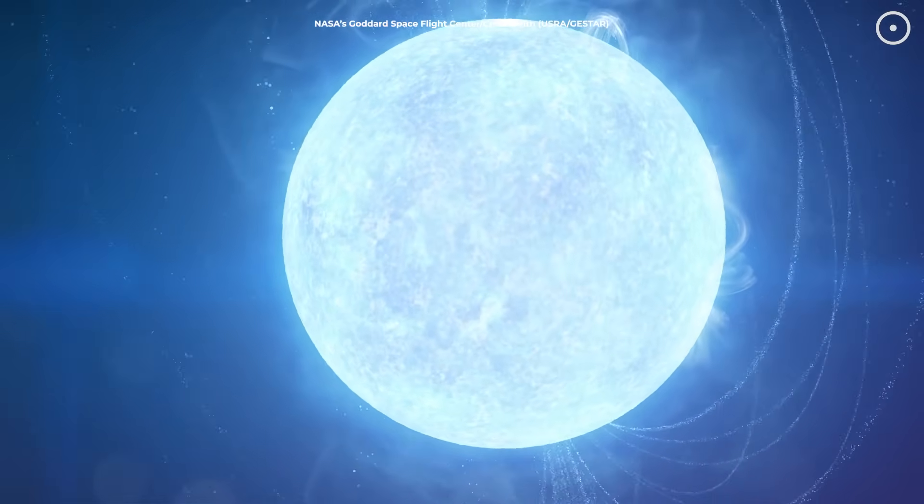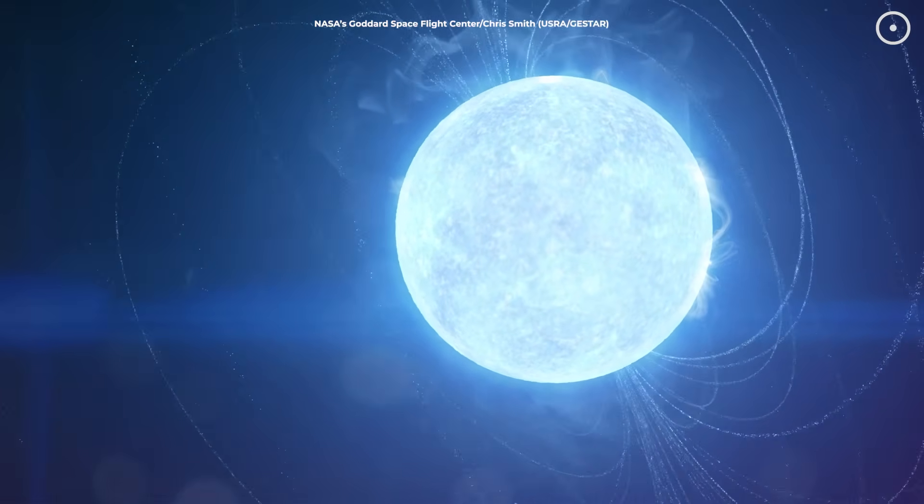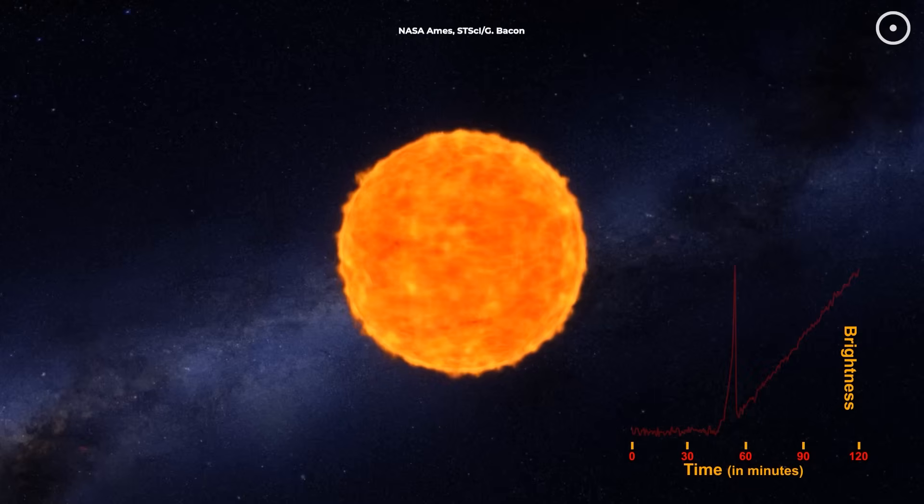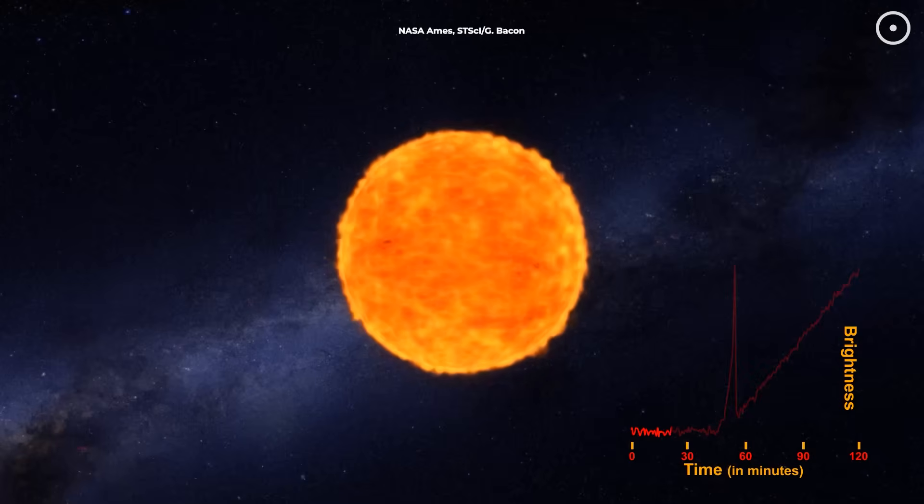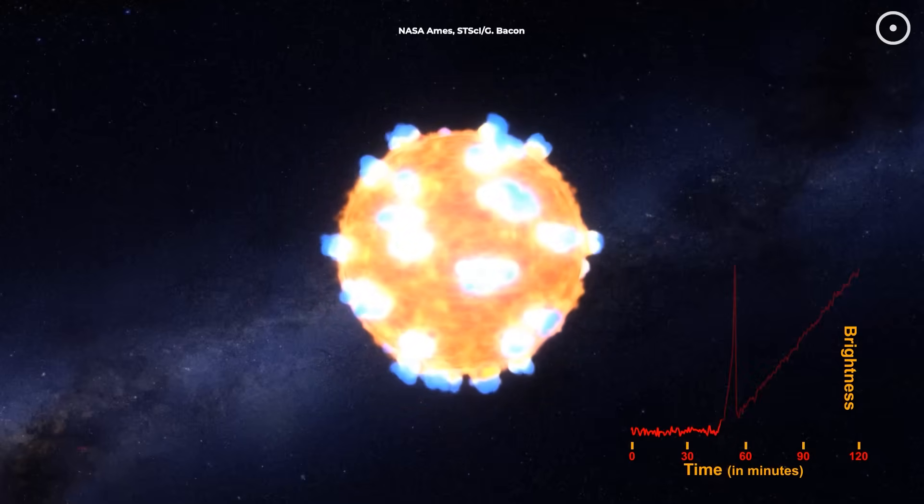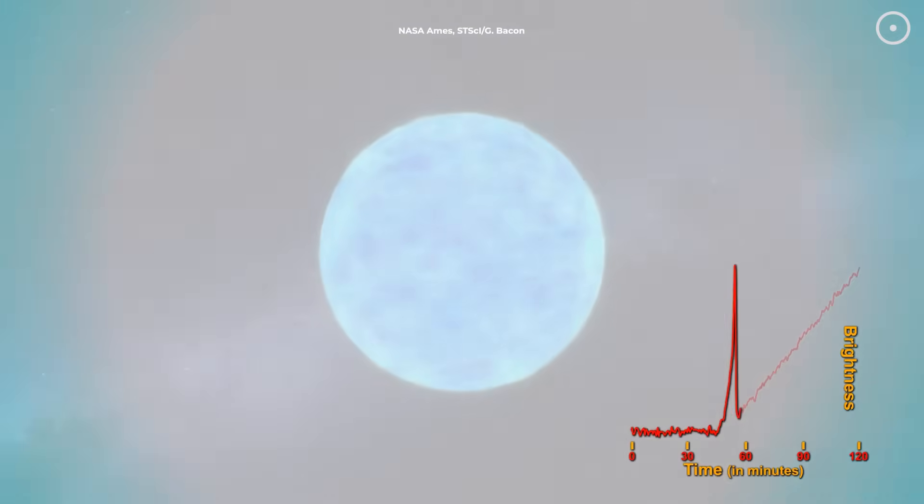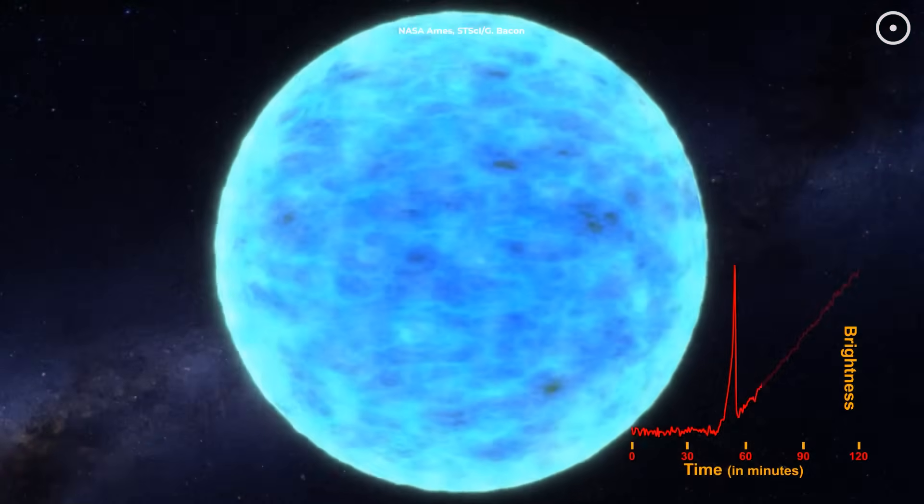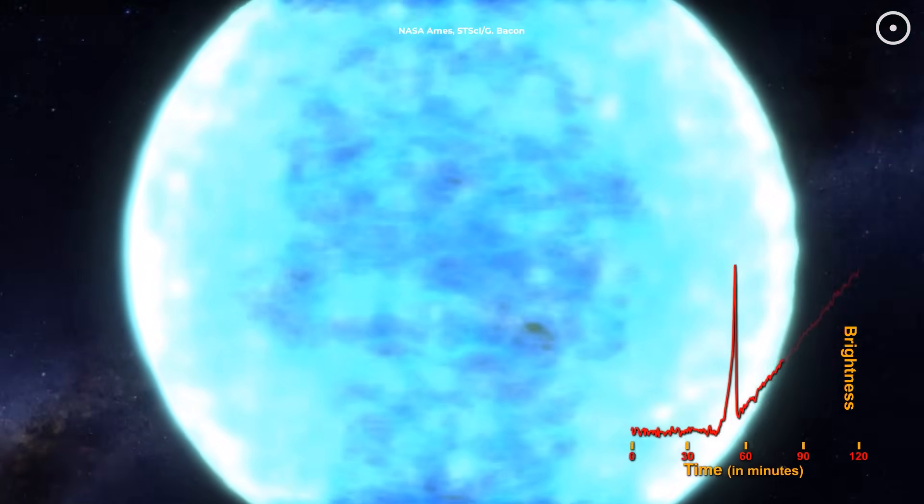So how do you create something so magnetically powerful it defies imagination? It all starts with a star that's having the absolute worst day possible. We're talking about stars that are at least 10 to 25 times more massive than our Sun. These are the cosmic giants that live fast and die spectacularly.